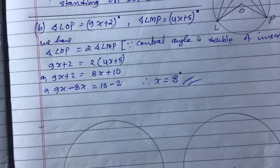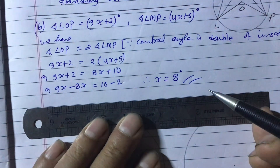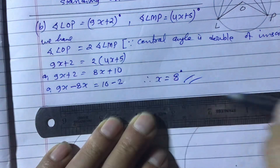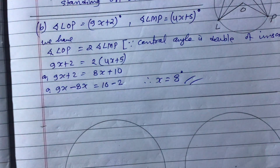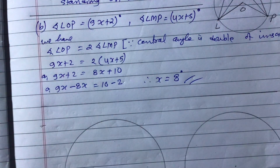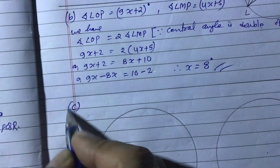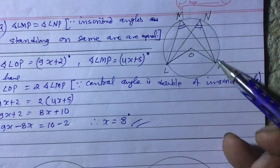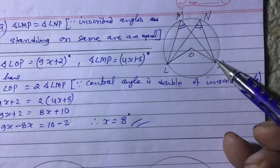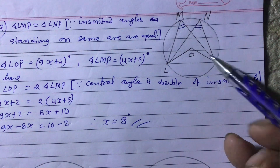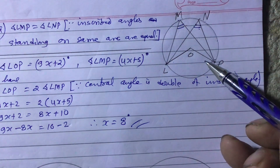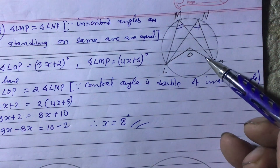Part B is complete. Now we move to question number C. In part C, we are asked to experimentally verify the relationship between inscribed angles LMP and LNP — we need to explore that relationship through actual measurement.